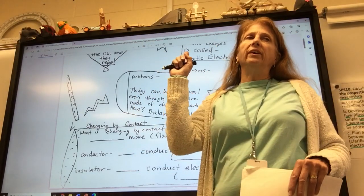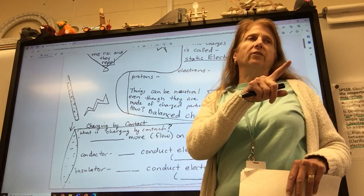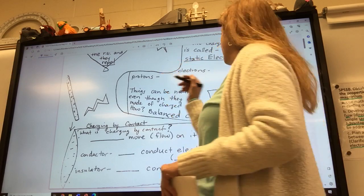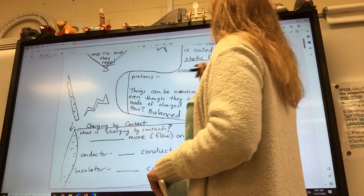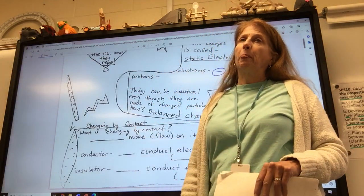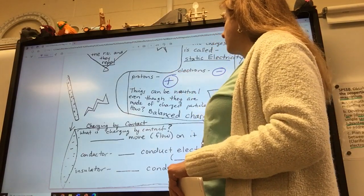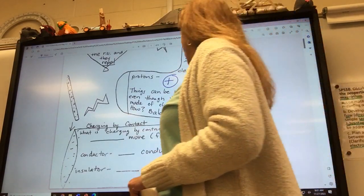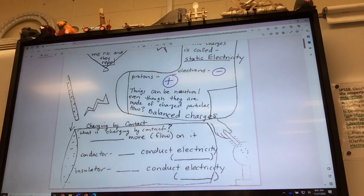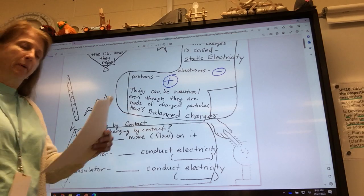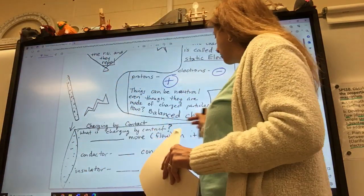What charge do electrons have, Gunnar? Negative. What charge do protons have? Positive. Y'all know so much already. Things can be neutral even though they're made out of charged particles. How? They have balanced charges. They have the same number of positive and negative and it makes them neutral.